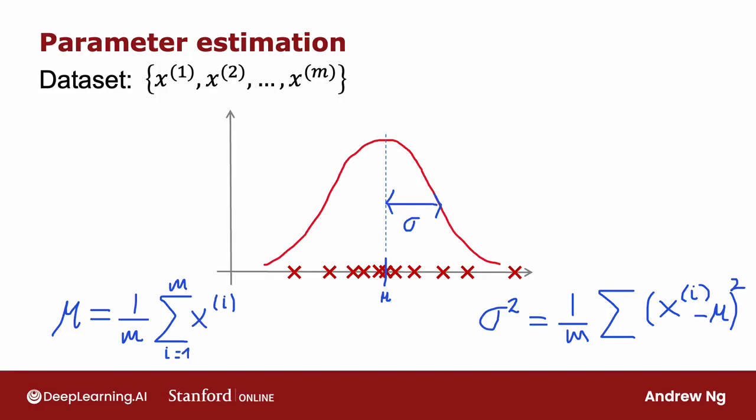It turns out that if you implement these two formulas in code with this value for mu and this value for sigma squared, then you pretty much get the Gaussian distribution that I hand drew on top. This will give you a choice of mu and sigma for Gaussian distribution so that it looks like the 11 training examples might have been drawn from this Gaussian distribution.